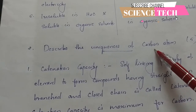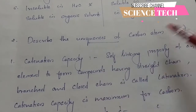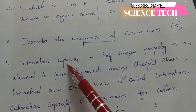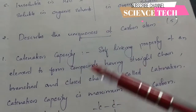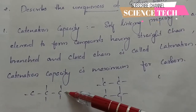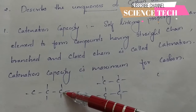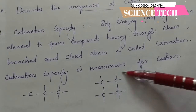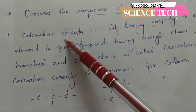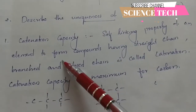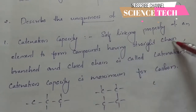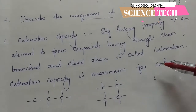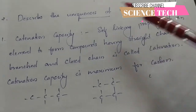Describe the uniqueness of carbon. The first characteristic is the catenation property. Catenation is the self-linking property of an element to form compounds having straight chain, branched chain, and closed chain. Catenation property is maximum in carbon, and that is one point of carbon's uniqueness.